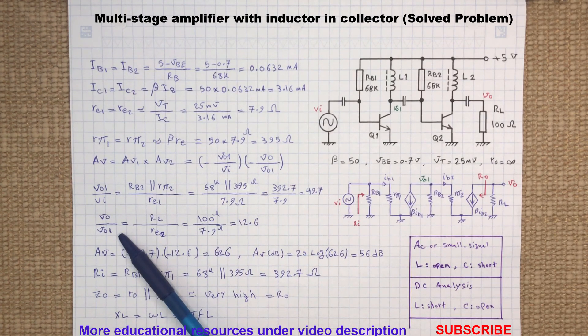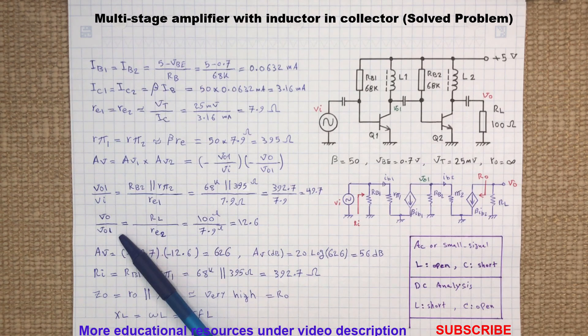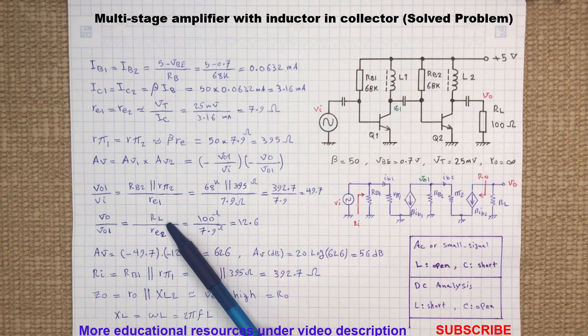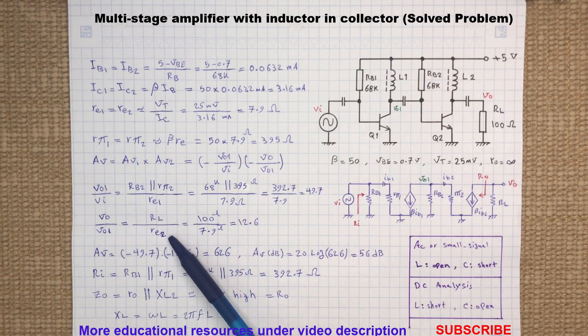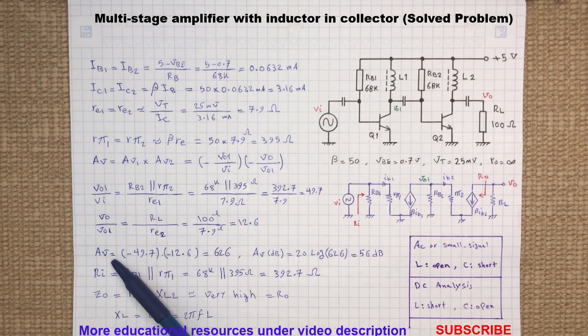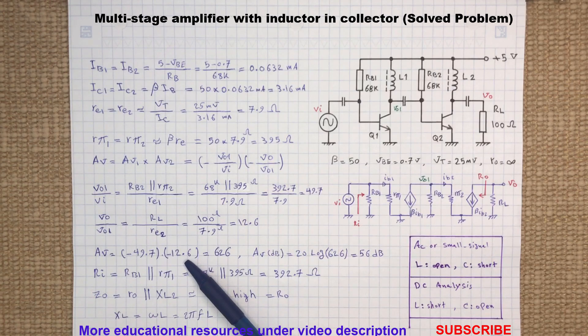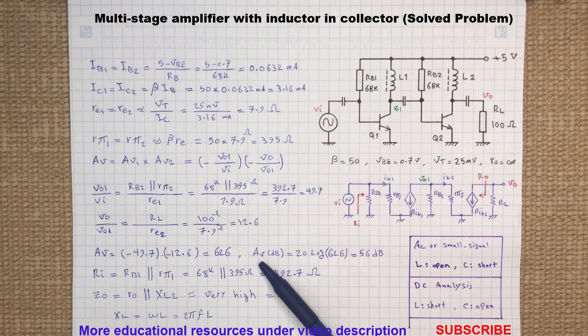For the second stage, the voltage gain VO to VO1 will be the ratio of the load resistance to the emitter dynamic resistance of Q2. Therefore, the overall voltage gain will be multiplying the voltage gain of the stage one by gain of the stage two, and here is the voltage gain in dB.